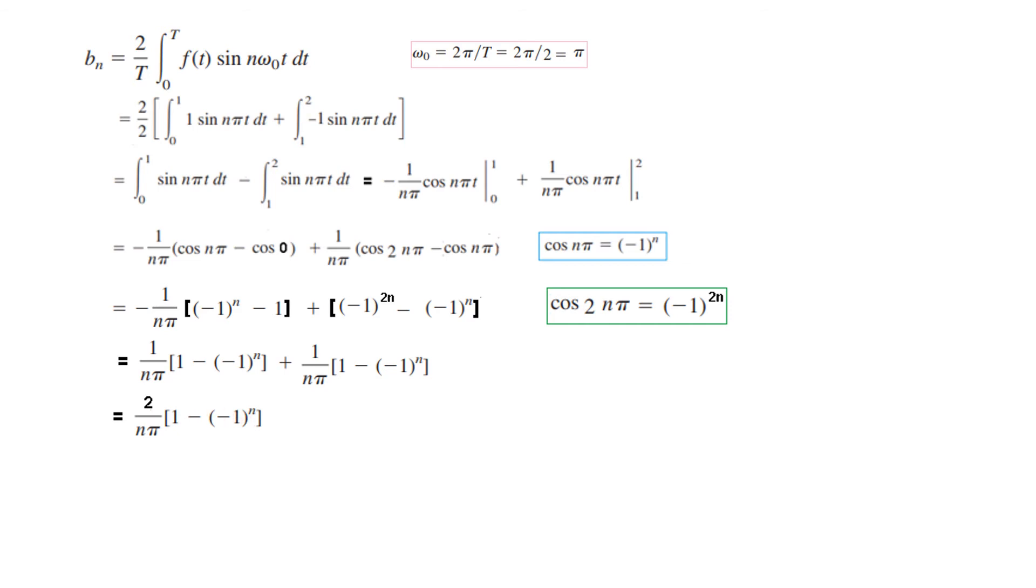But if n is even for example n is 2. Then this square will be positive. 1 minus positive 1 will be 0. So for even the value will be 0. And for the odd it will be 4 over n pi. So this we can write it like this. That the function bn will be 4 over n pi for n is equal to odd. And 0 for n is equal to even.